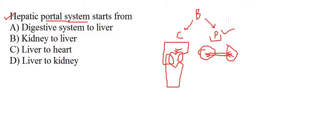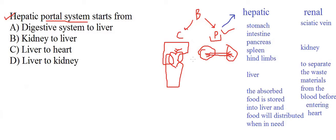There are two types: the Renal Portal System and the Hepatic Portal System. The difference between them is that the Hepatic Portal System starts from the stomach, intestine, pancreas, spleen, and hind limbs.